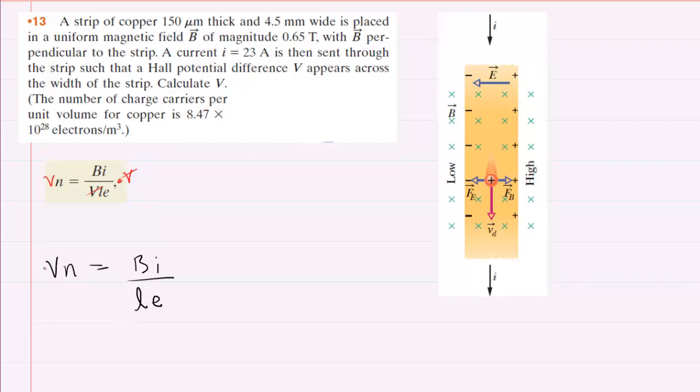And then to solve for V, we will multiply both sides by 1 over N. On the left side, the Ns will cancel. This will leave us with V equals - and when you multiply fractions, you multiply the numerators. So that's going to leave you with BI up top, and then you'll have LEN. So really, it's just a matter of plugging in all of these known quantities, and that will give us the value of V.